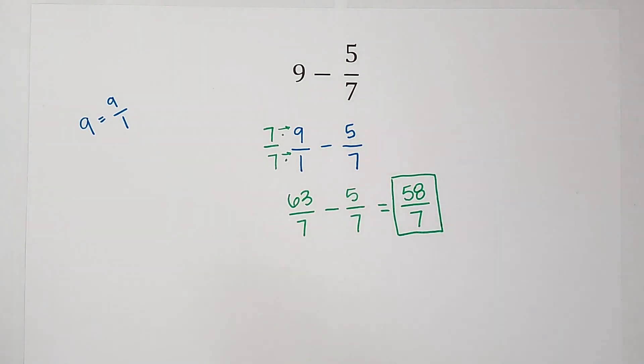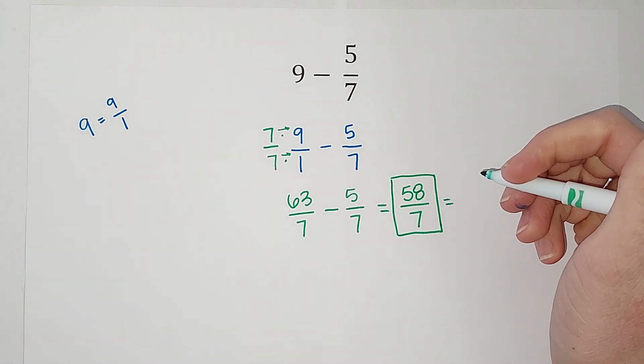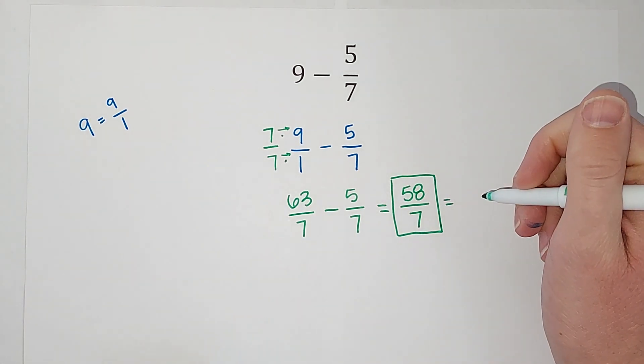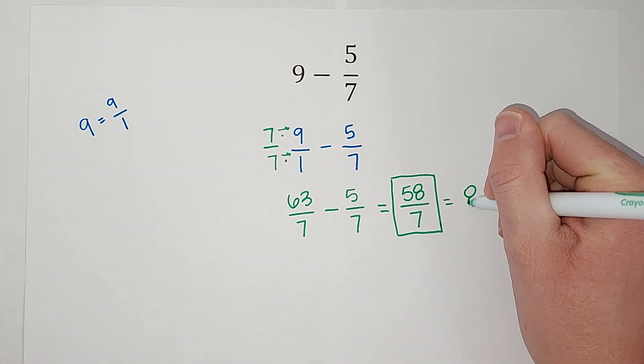And then also, if your teacher wants it as a mixed number, we can do that. To turn it into a mixed number, I'll link a video, but we see how many times 7 goes into 58, which 7 goes into 58 8 times. But not evenly.